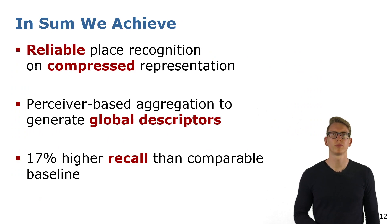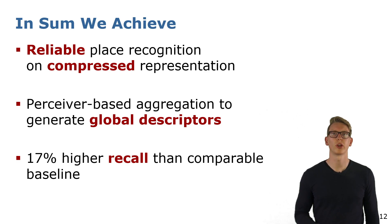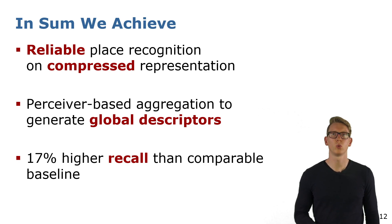In this work, we have proposed a network for point cloud based place recognition that directly operates on a compressed map. We are able to reliably retrieve our position without the need for decompression. Our proposed perceiver-based aggregation module generates global descriptors to compare point clouds. Even though we work on a compressed representation, we achieve a 17% higher recall than the most similar baseline. Thank you very much for your attention.